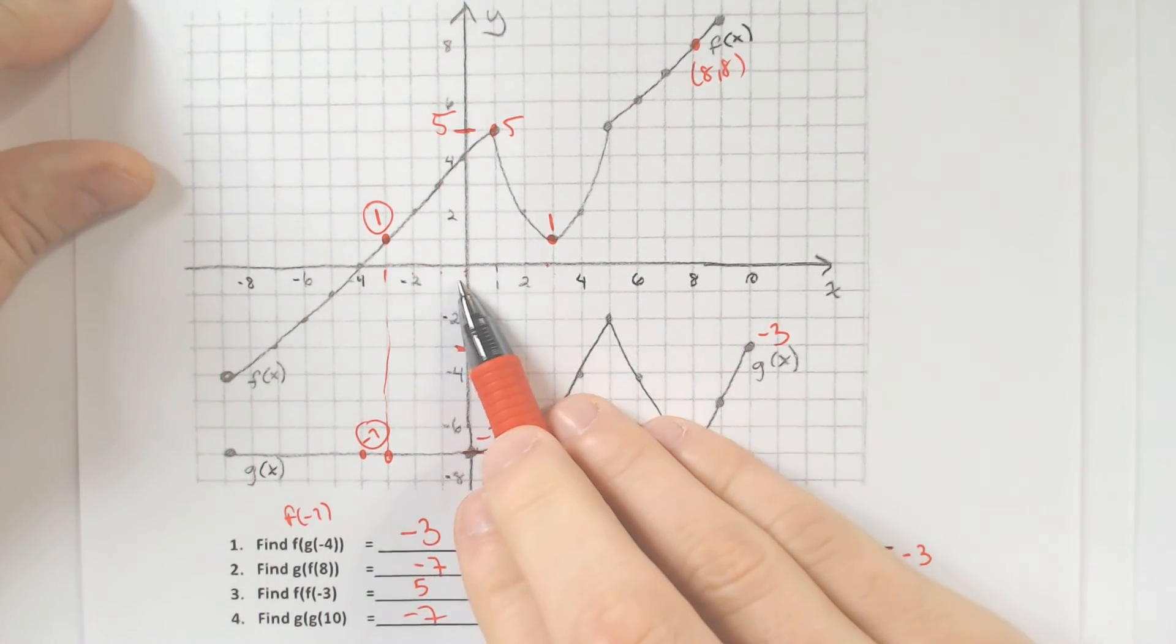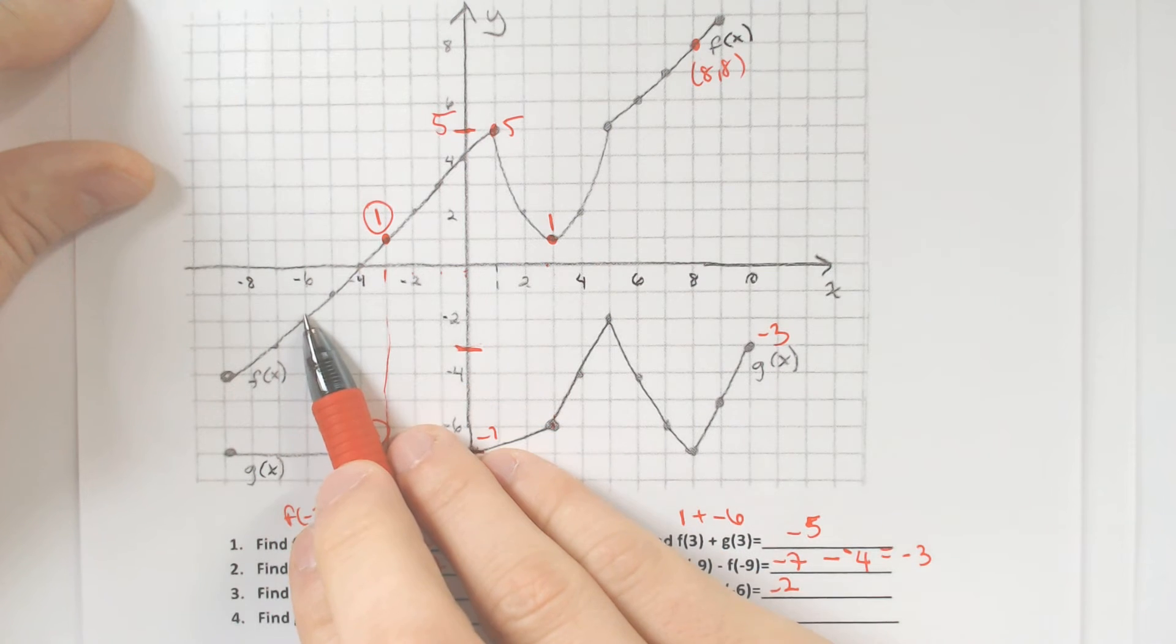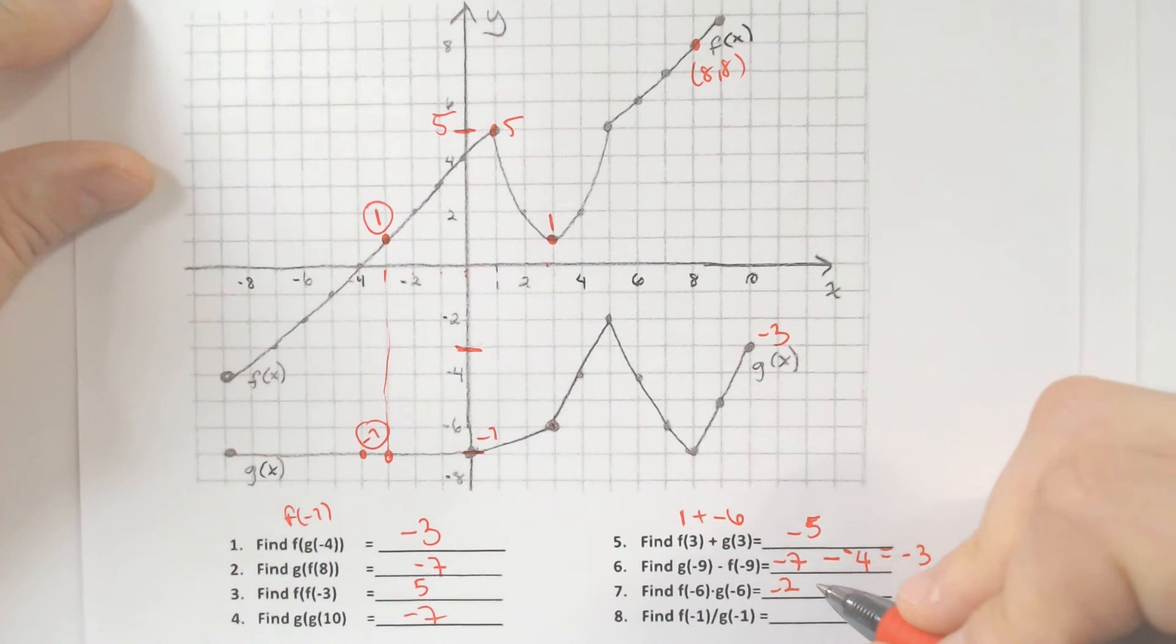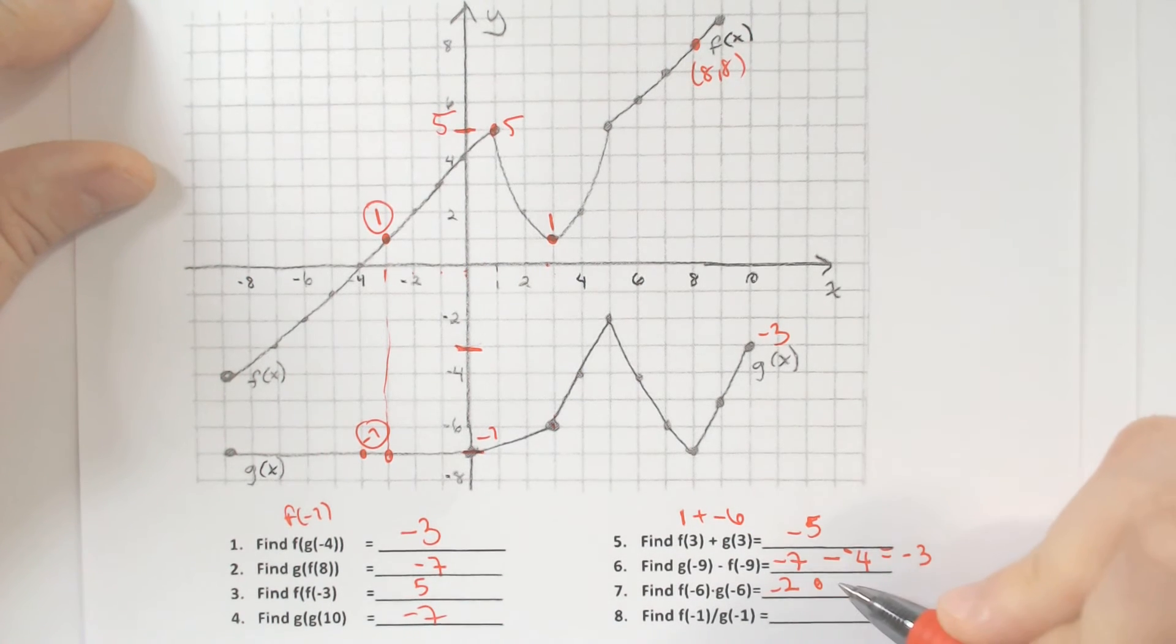And g of negative 6 is over here, and we've got to go all the way back down to the negative 7 because that's the y value. So we multiply because there's a multiplication symbol in between. Negative 2 times negative 7 equals 14.